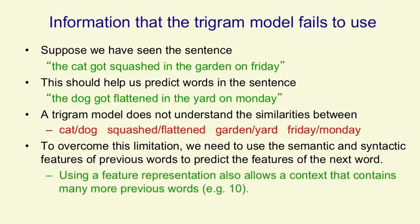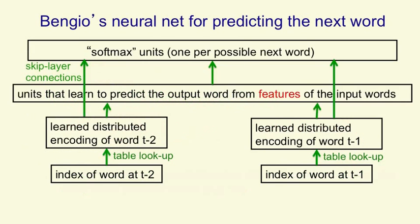Using a feature representation allows us to use much bigger contexts that contain many more words, for example 10 previous words. Yoshua Bengio pioneered this approach for language models and his initial network for doing this looks rather familiar. It is actually very similar to the family trees network, it's just applied to a real problem and it's much bigger.